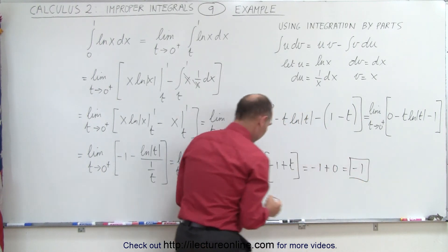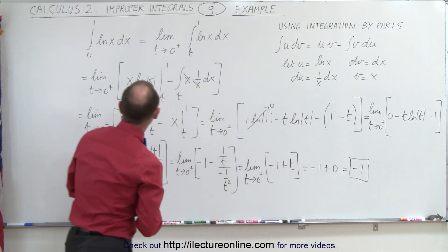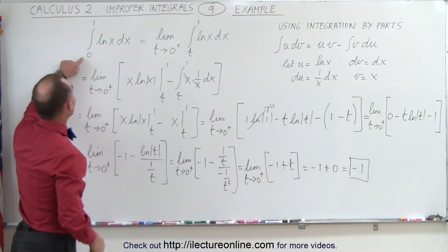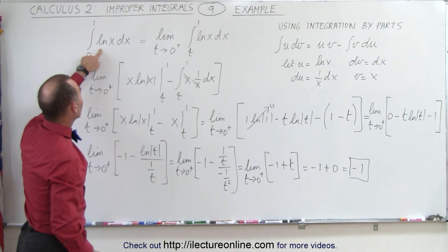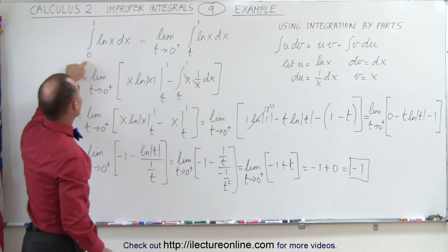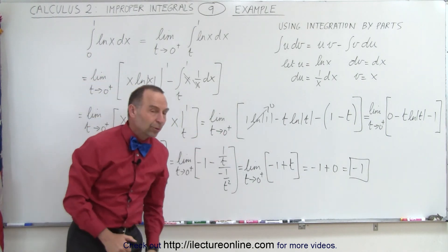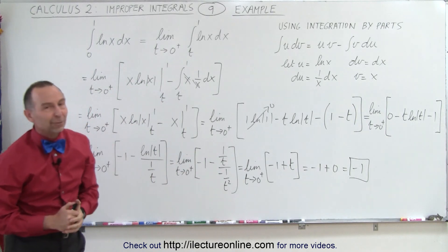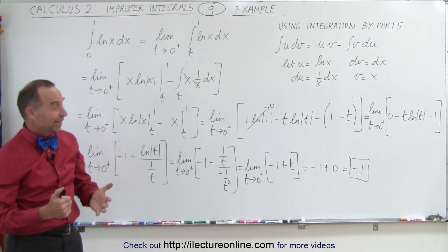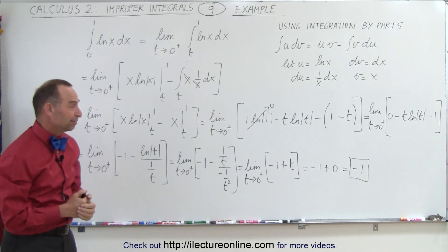So you can see that this integral — the integral of the natural log of x dx from 0 to 1 — is equal to negative 1. And that's how it's done.